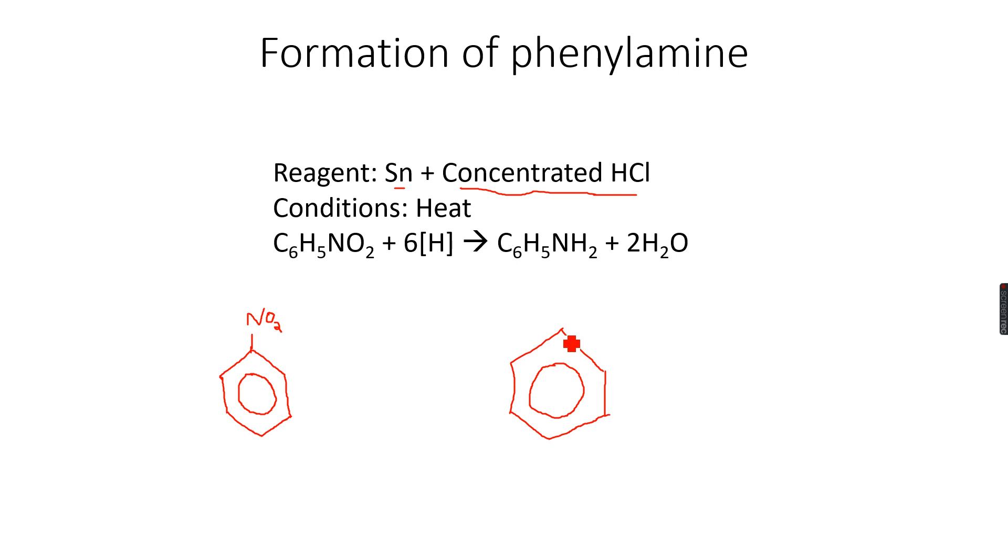I'll just make the structure of phenylamine. Attach an NH2 group over here. As you can see, the only difference between nitrobenzene and phenylamine is that instead of O2 we have H2. The N remains the same; the oxygen atoms have been replaced by hydrogen atoms.